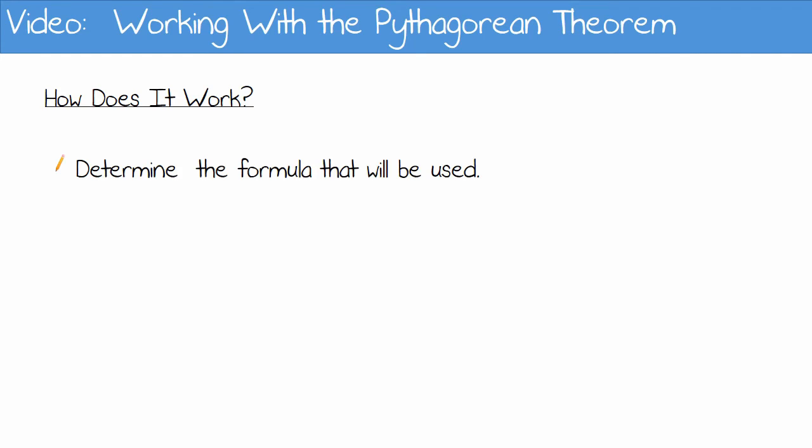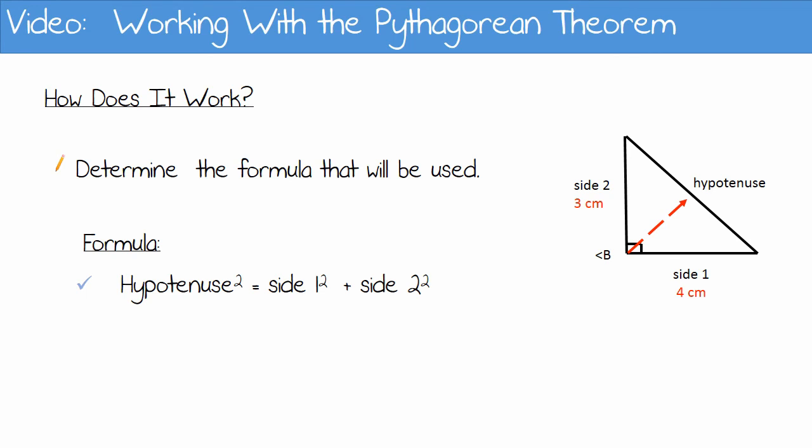Determine the formula that will be used. The hypotenuse squared is equal to side 1 squared plus side 2 squared.